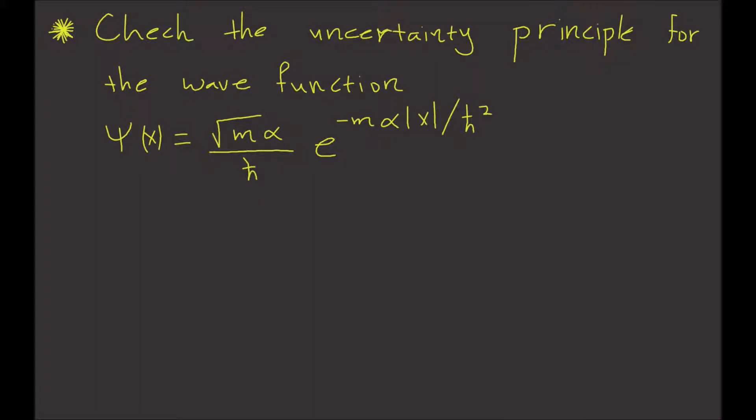Here we need to check the Heisenberg principle for the wave function. This is the solution for the Dirac delta function for the Schrödinger equation. So let's get started.